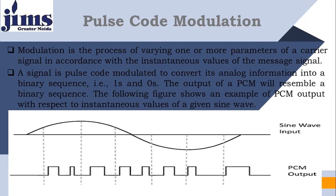The message signal is that signal that is full of information. The information signal is also called a message signal. In modulation, we change one parameter — amplitude, frequency, or phase — with respect to the amplitude of the message signal. That process is called modulation.